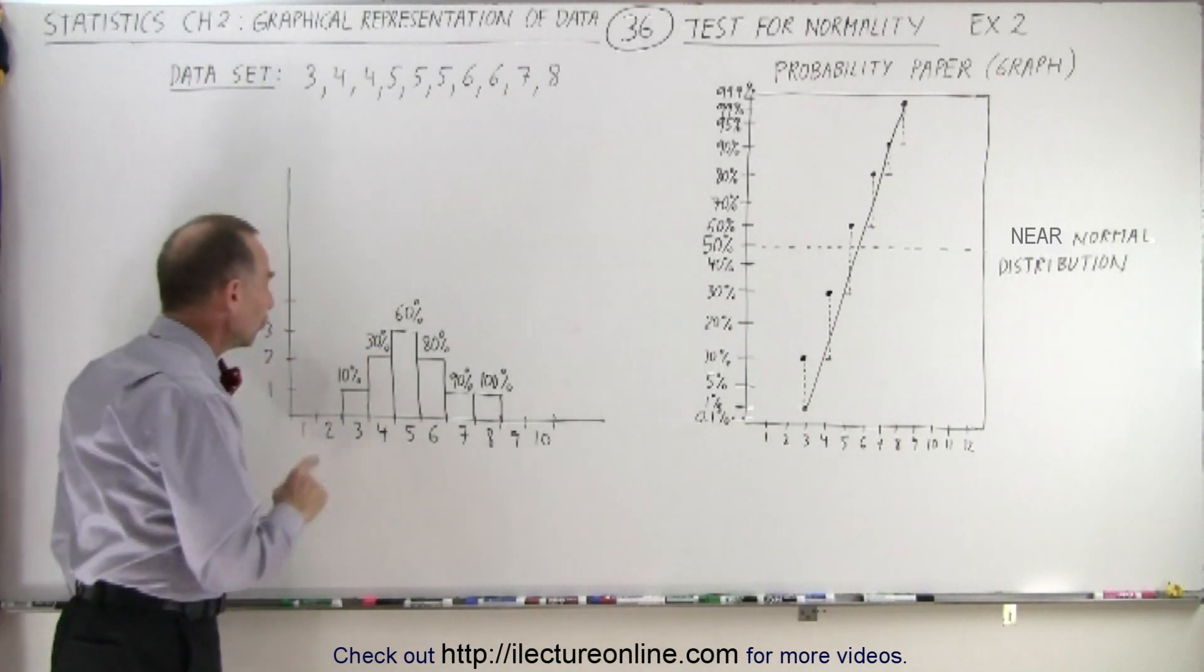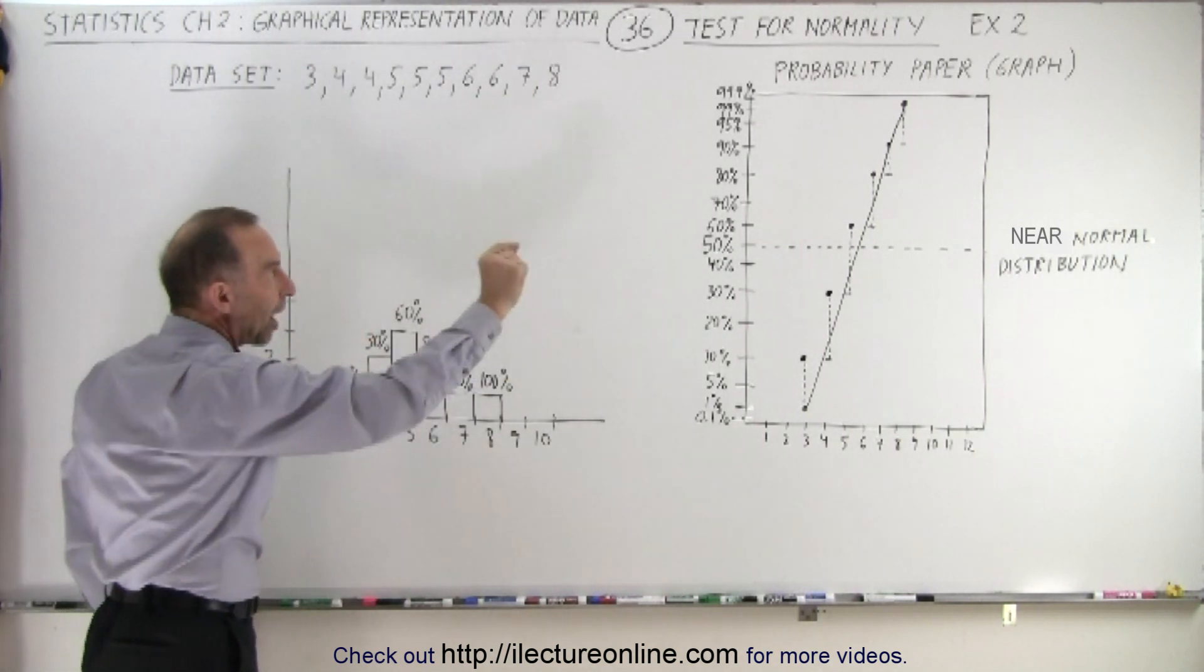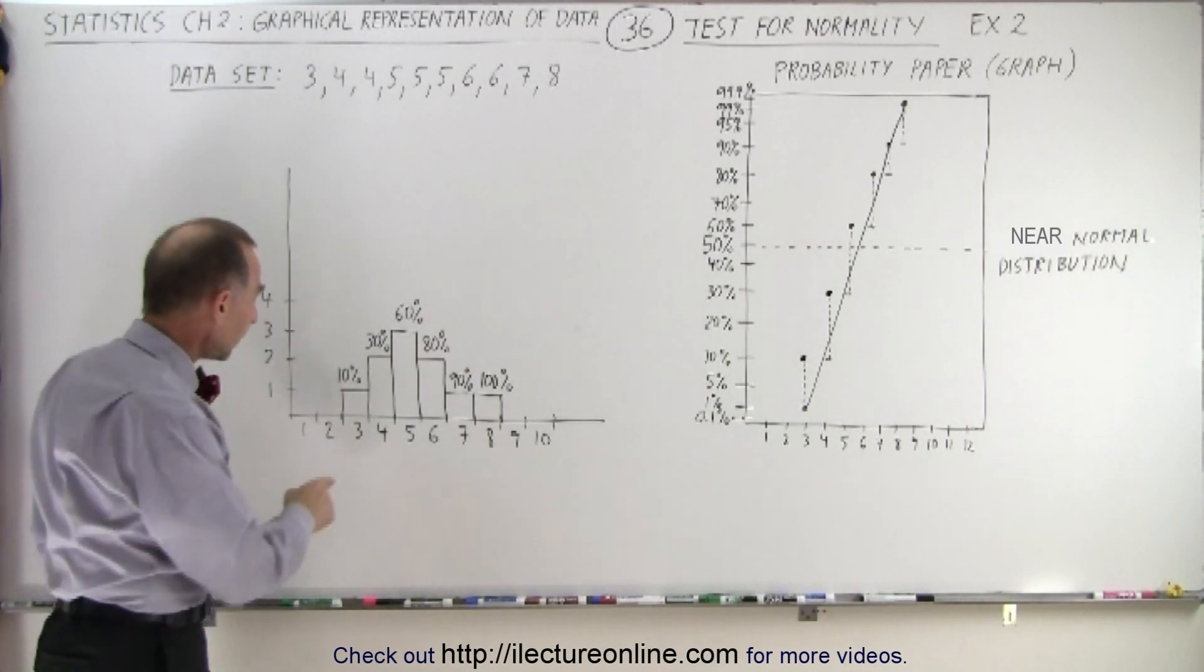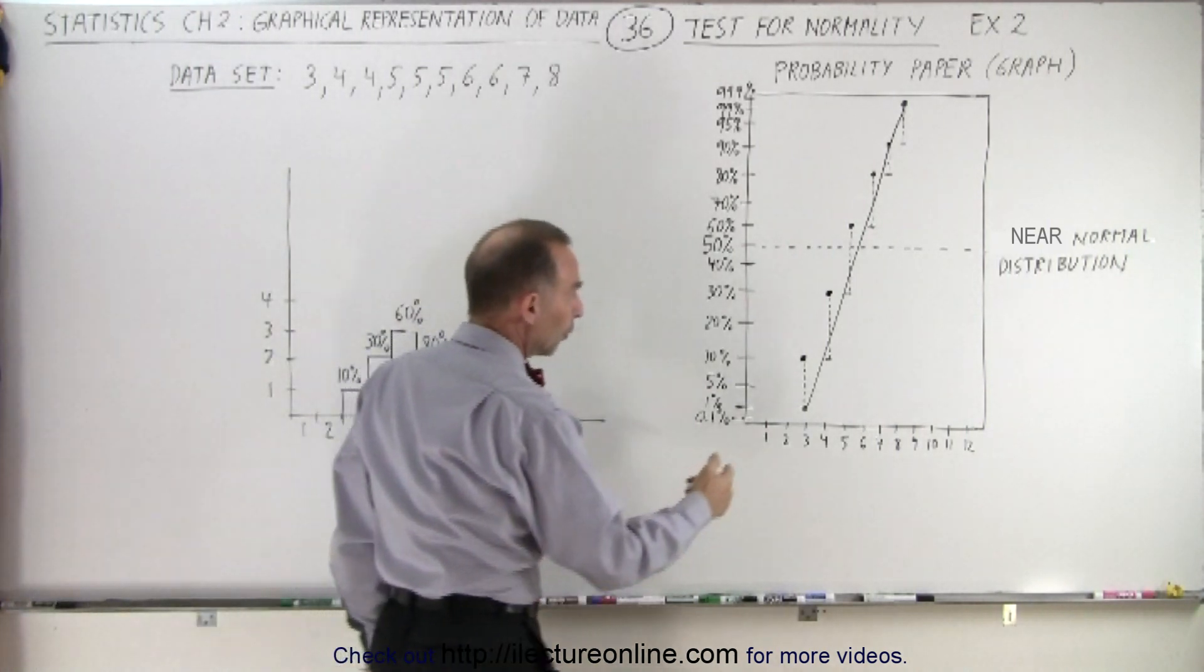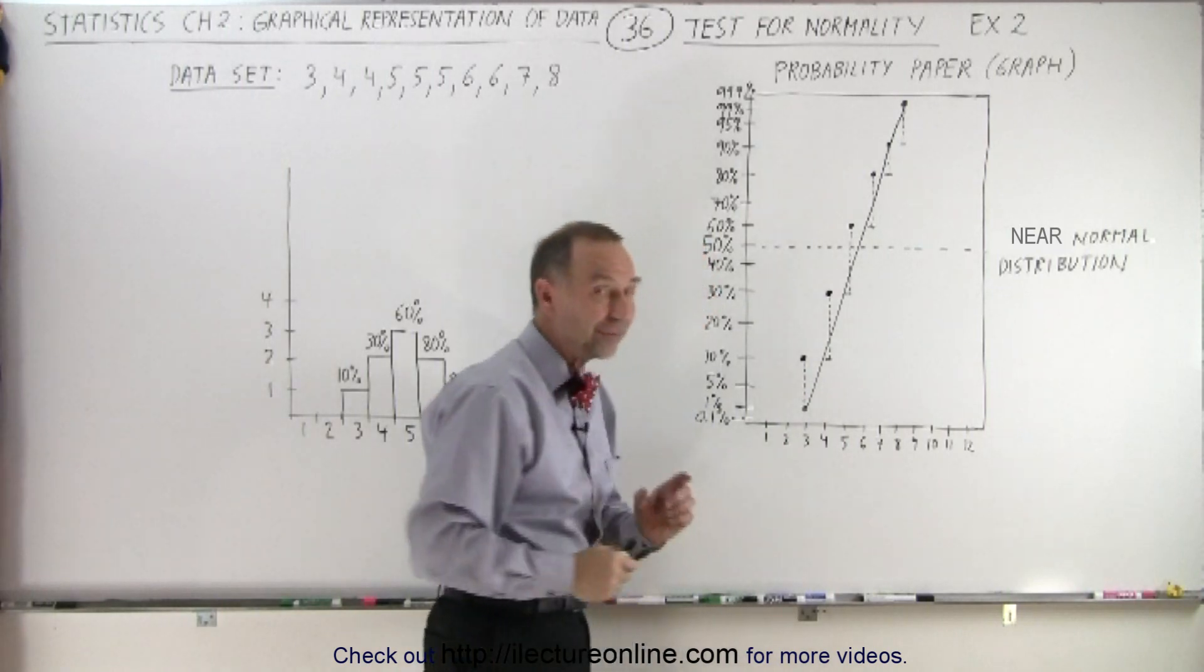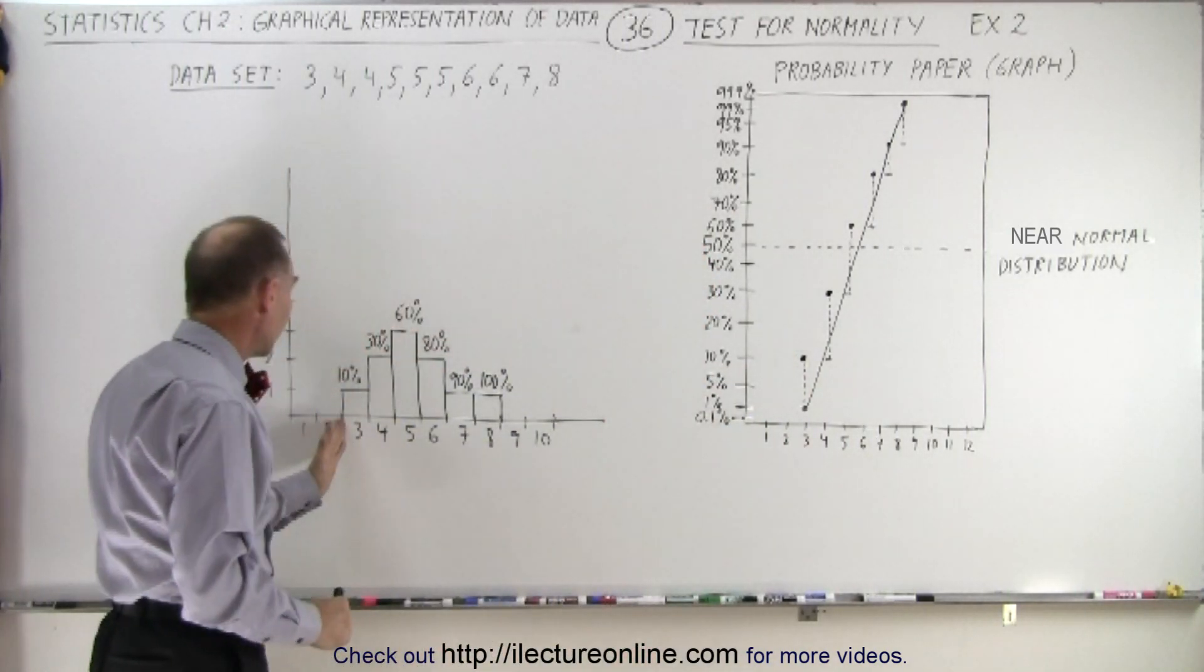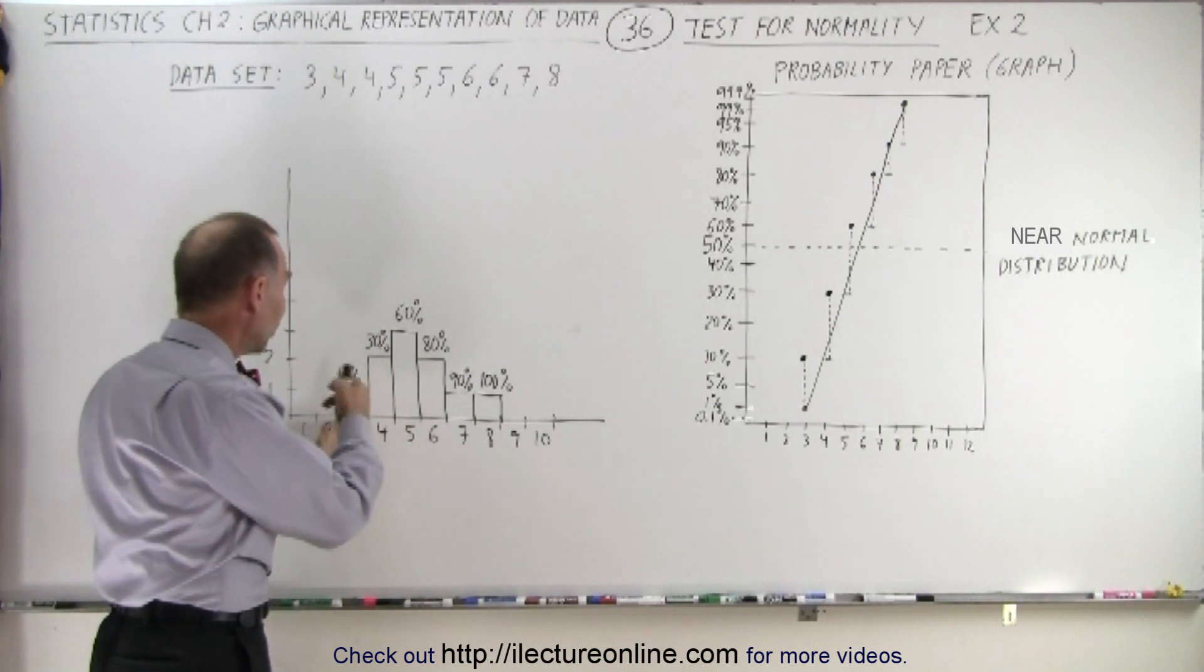Now you plot the points on the probability graph according to each data point. For the number 3, you go from 0 to 10%. It's good to put the range of percentages down—you have 0% before the data point, then with the data point you're up to 10%, so you draw the line and dot at 10%.